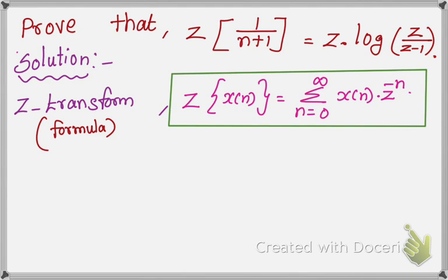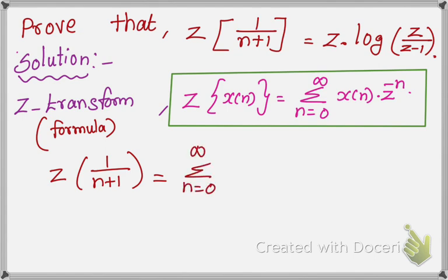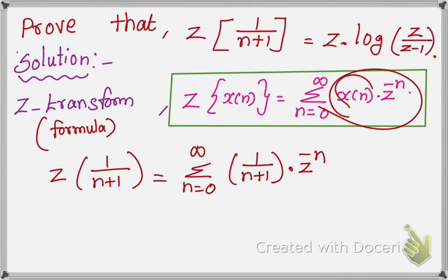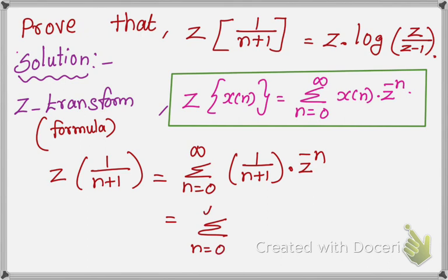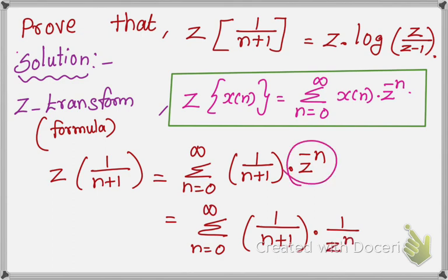Next, we are going to find the value of Z of 1 over (n plus 1). So, Z of 1 over (n plus 1) equals summation from n equal to 0 to infinity of 1 over (n plus 1) times C to the power minus n. Moving C to the power minus n to the bottom, it changes into C to the power positive n.